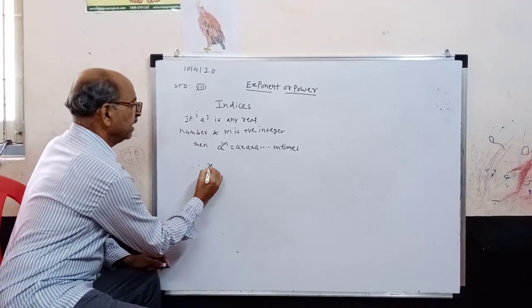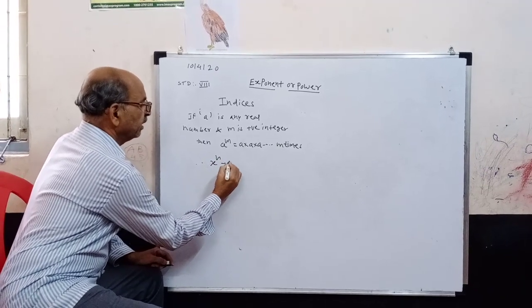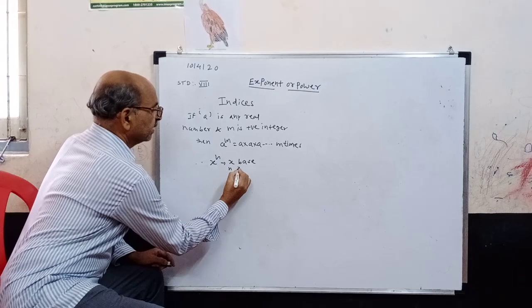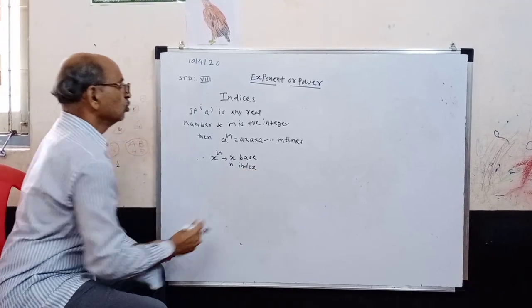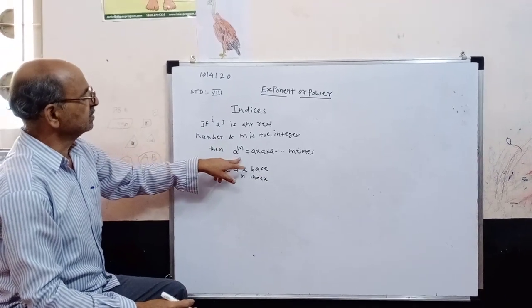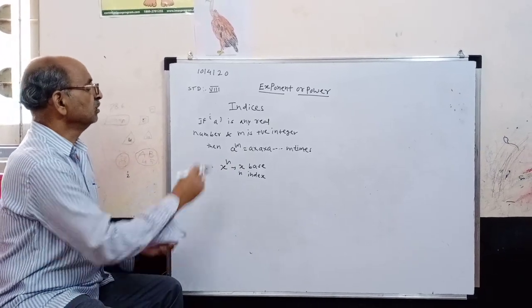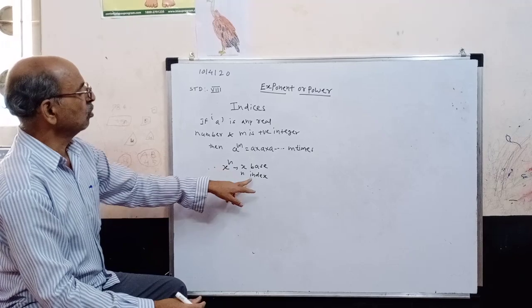Here, if we write x raise to m, then here x is base and m is index or power. The number that is the base is called as base, and the number which is written on the head of the base, that is called as index.